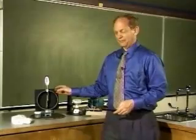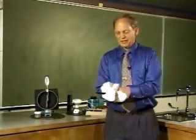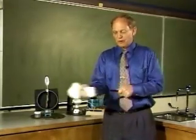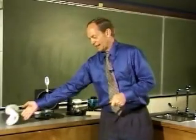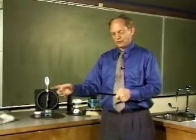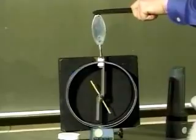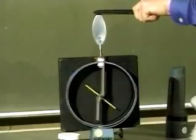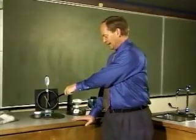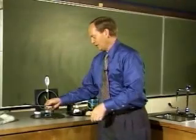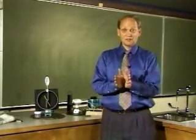Here I have an electroscope, which I'm going to charge up with electrons from a rubber rod. I rub the rod with fur, electrons are transferred from the fur to the rod, and I touch the rod to the top plate. Electrons are transferred to the top plate and down to the yellow rod because of the electric force.